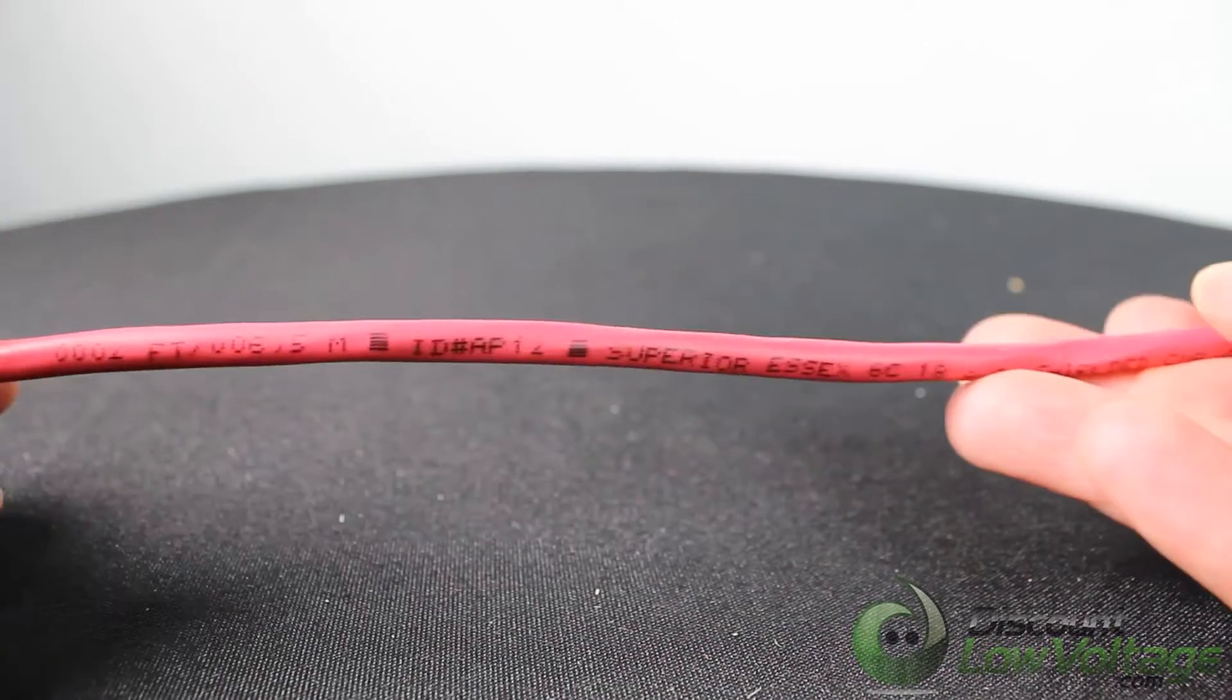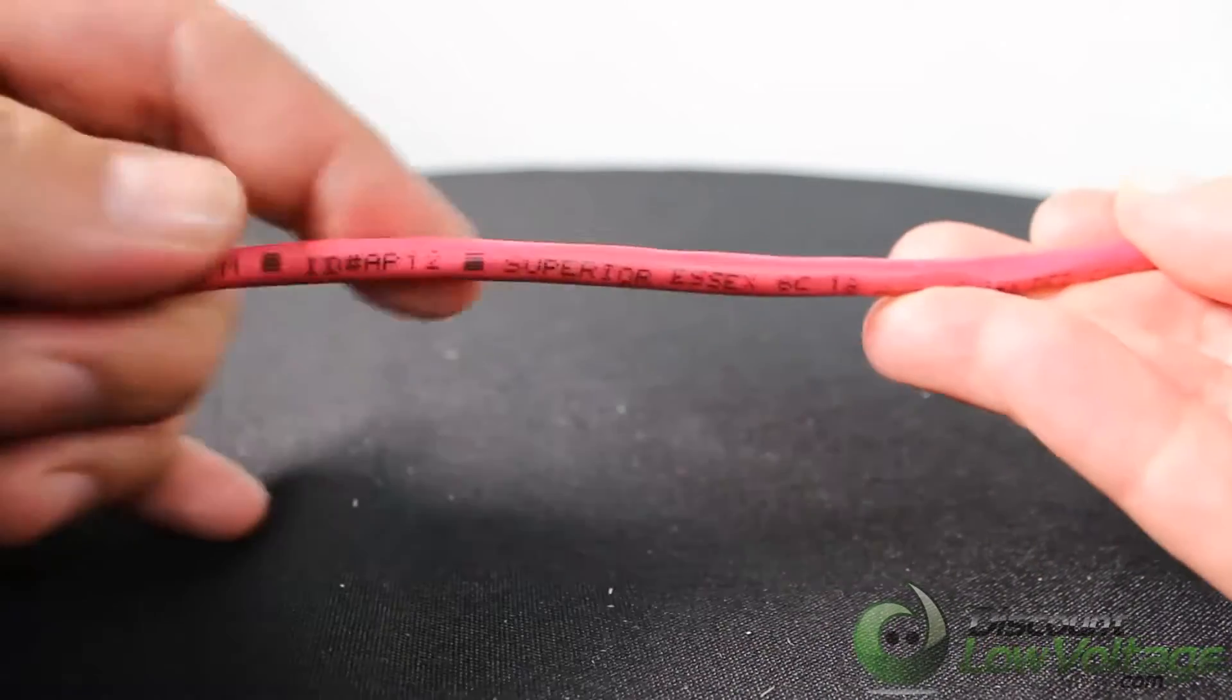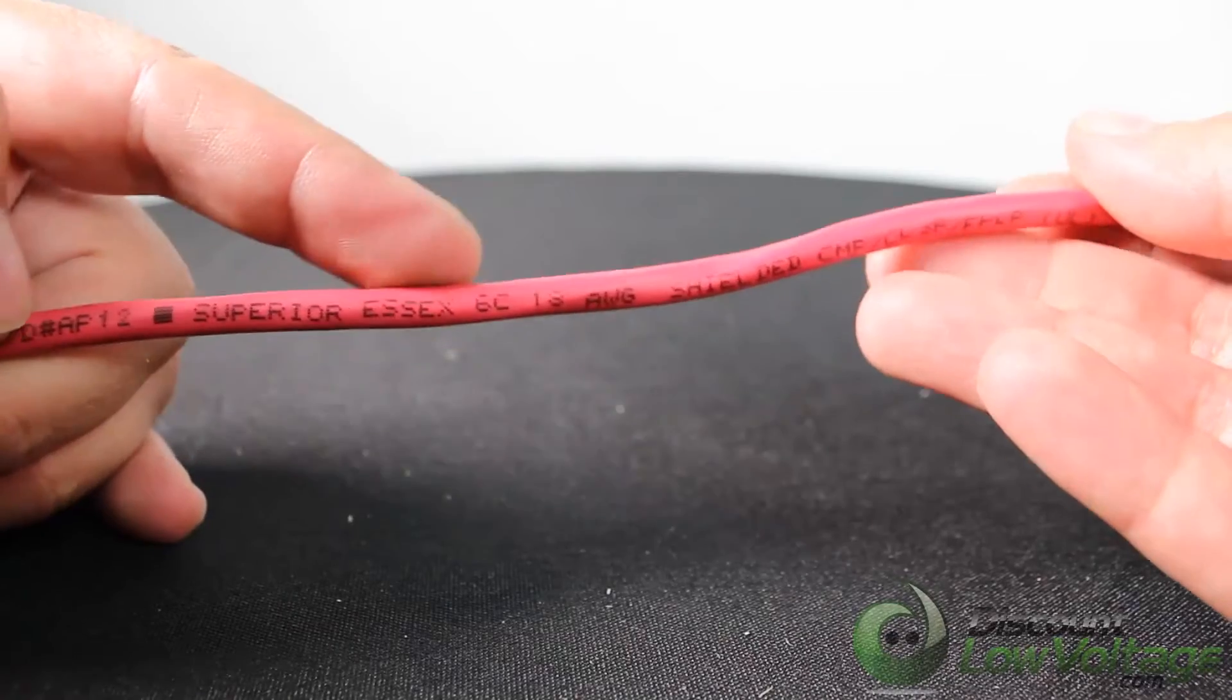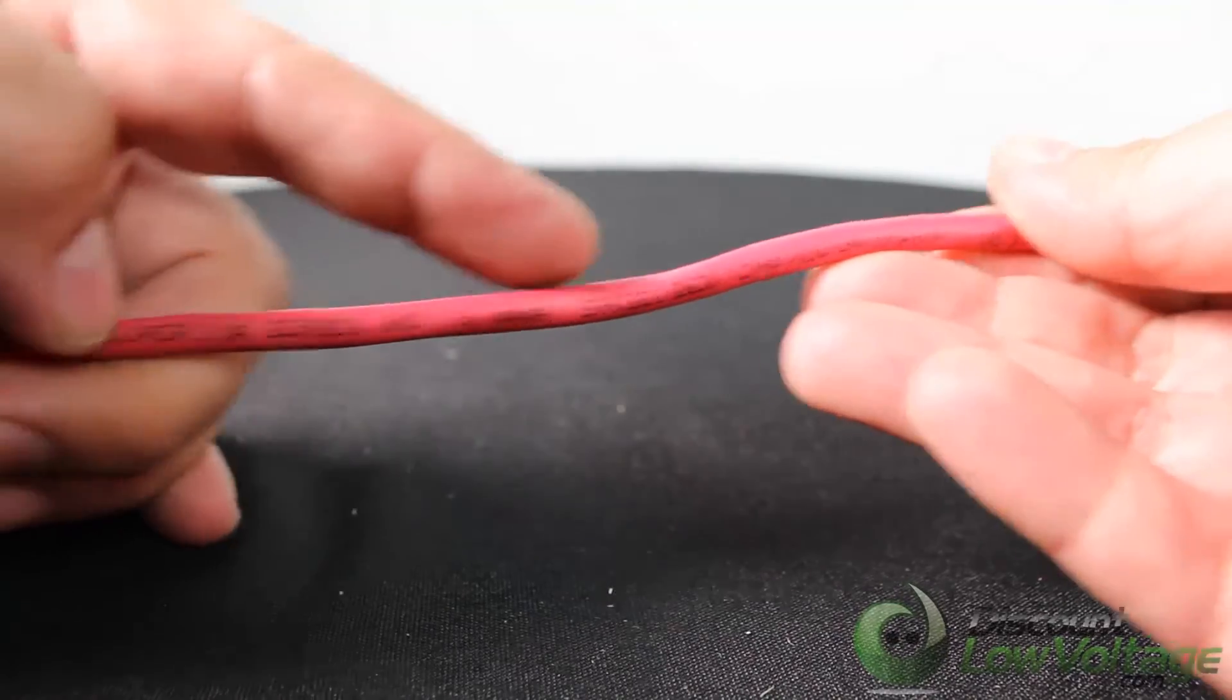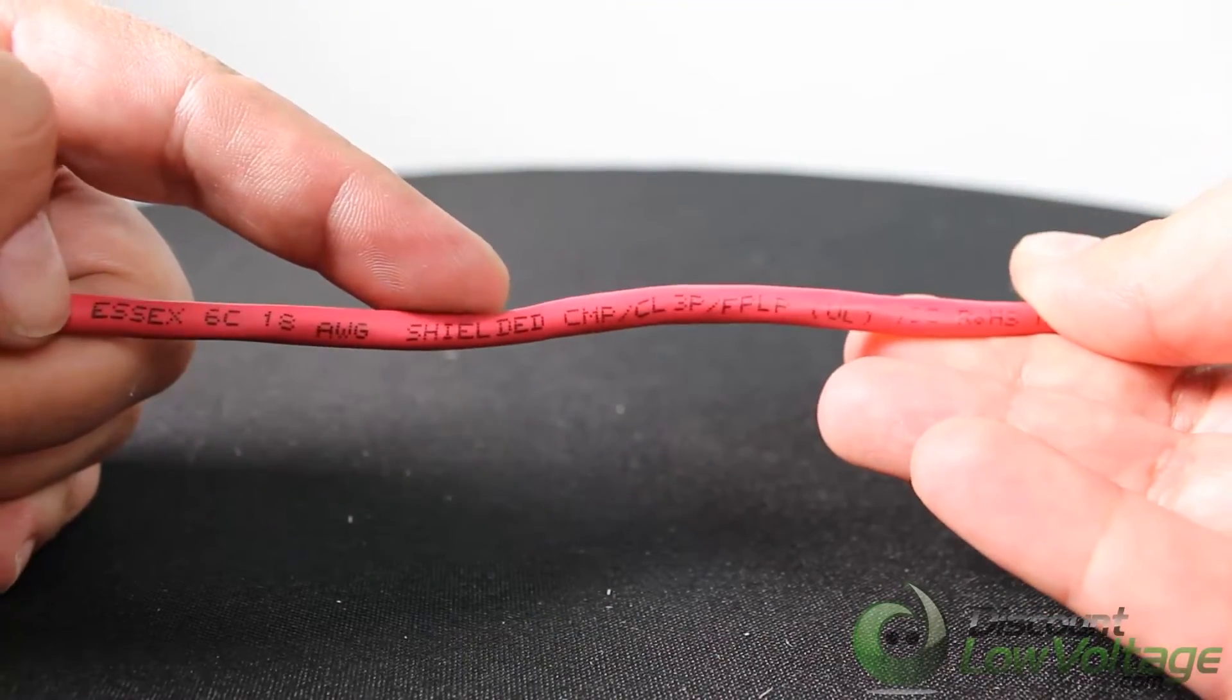This cable is manufactured by Superior Essex. It's a six conductor cable, 18 gauge, shielded, and plenum rated. Available on a thousand foot reel.